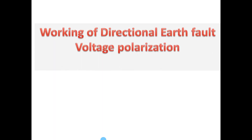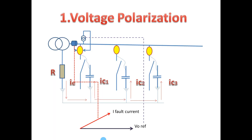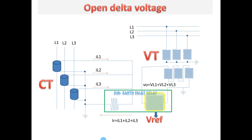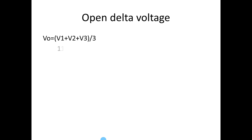This is the diagram for the voltage polarization method. The CT may be a phase CT or neutral CT. For this connection, first we are going to see an open delta voltage. Normally, if all three phase voltages are balanced, this open delta will be zero.